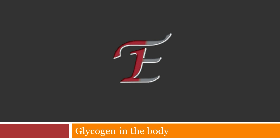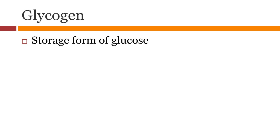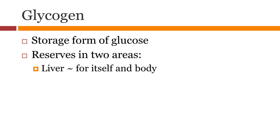Let's look at the function of glycogen as an energy reservoir in our body. Glycogen is used as a form of storage of glucose in our body. It is mainly found in the liver and the muscle. The liver glycogen stores can provide for itself and the body. However, the muscle glycogen stores are only available for the muscle.